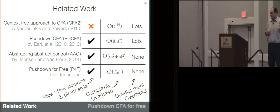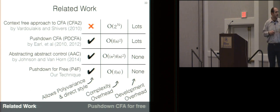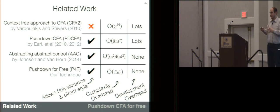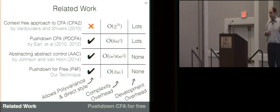There are three papers we directly build on. First, the context-free approach to control flow analysis — not designed with polyvariance or direct-style languages in mind, giving an exponential increase in complexity and additional coding overhead. Second, pushdown control flow analysis (PDCFA) — more flexible but with quadratic complexity overhead and significant extra code complexity. Third, abstracting abstract control (AAC) — which requires only a trivial code change like our technique, but has more than quadratic increase in complexity.